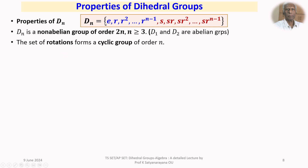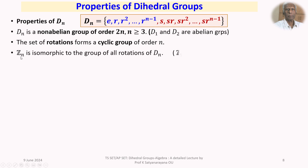The set of all rotations {E, R, R^2, …, R^{N−1}} forms a cyclic subgroup of order N generated by R. Since any two cyclic groups of the same finite order are isomorphic, this rotation subgroup is isomorphic to Z_N.